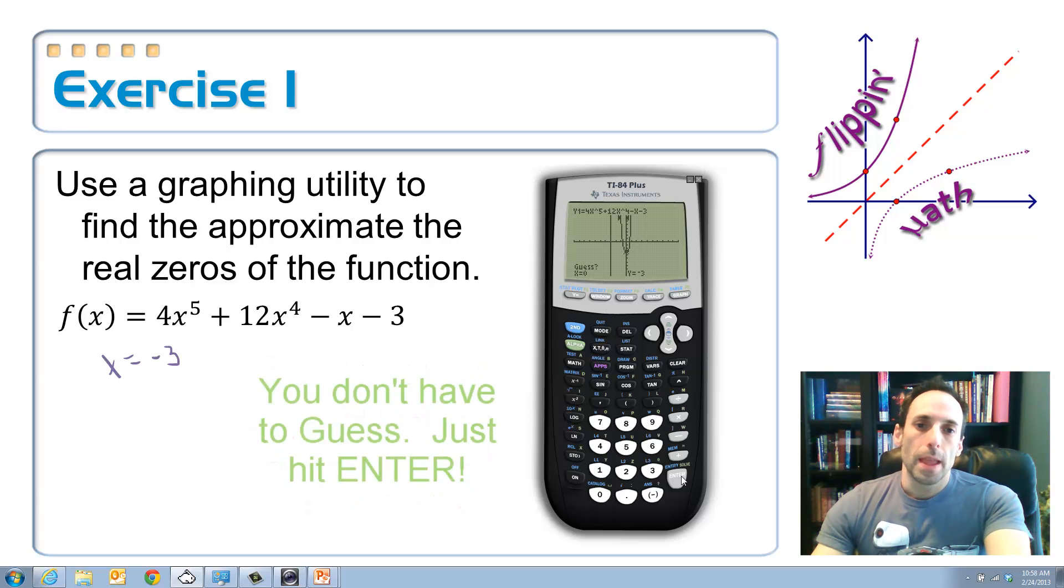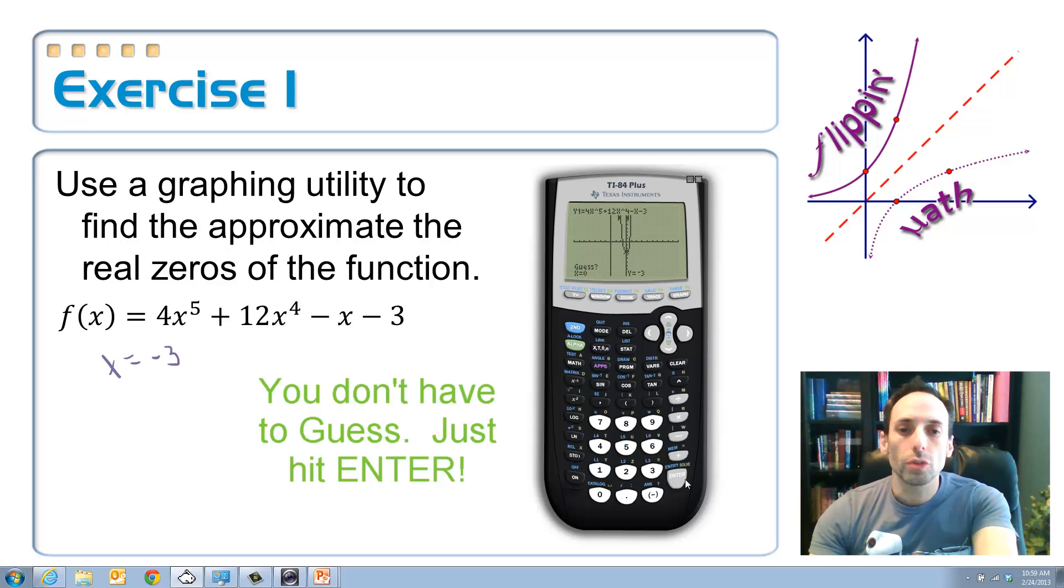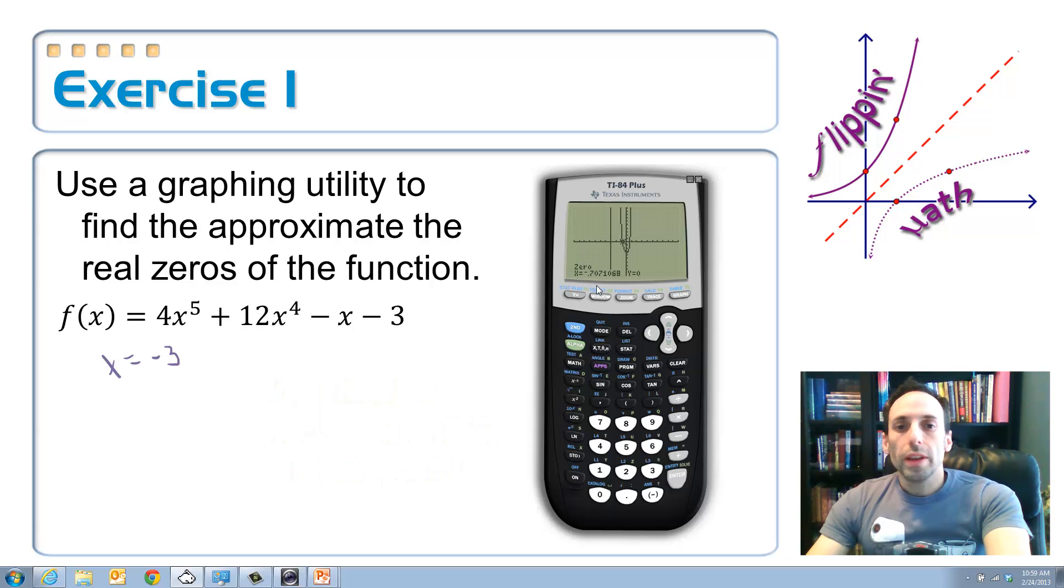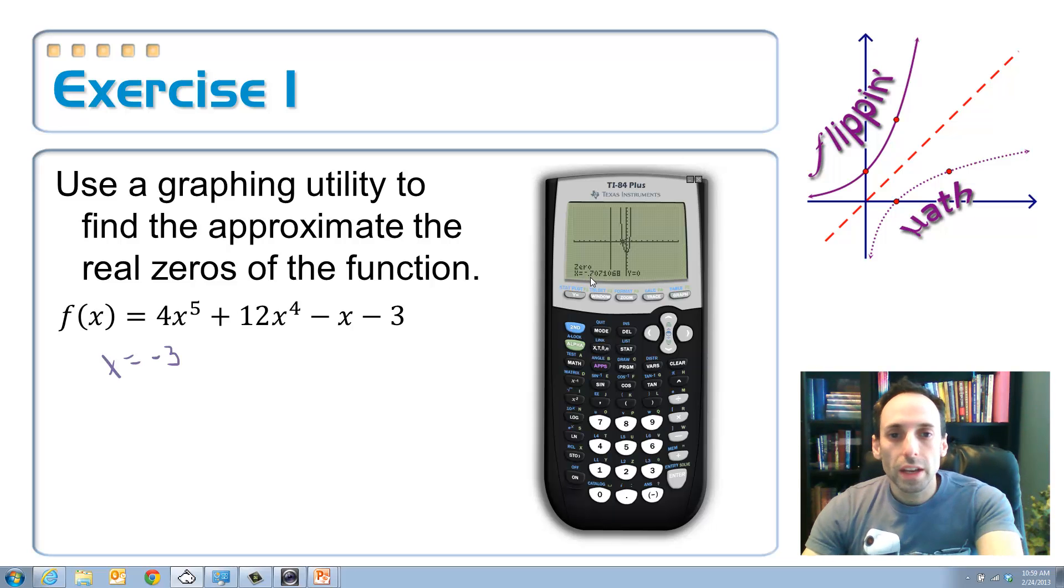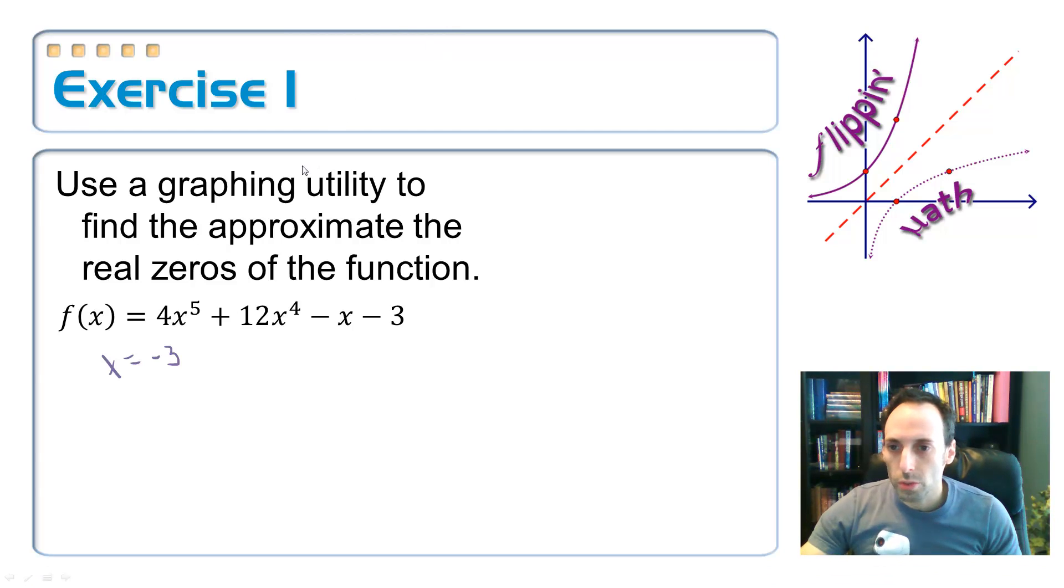And for the guess, you don't have to play that game. It's just asking, well, what's a convenient place for me to start? If you wanted to scroll through and play that game, you can. Otherwise, just hit enter and it'll still find it for you. So, displayed at the bottom of the screen, there's our other zero. It's about negative 0.707. So, here's our next one.